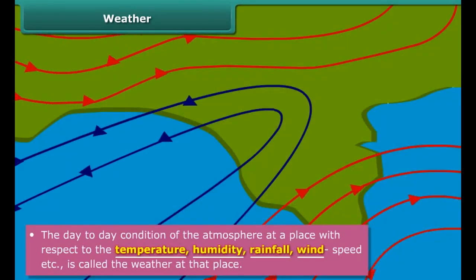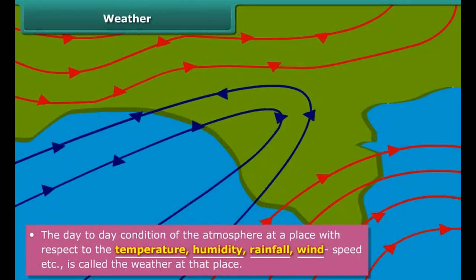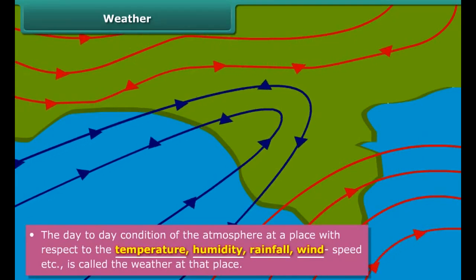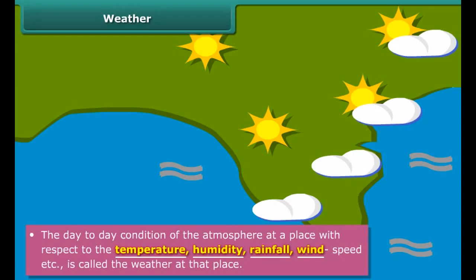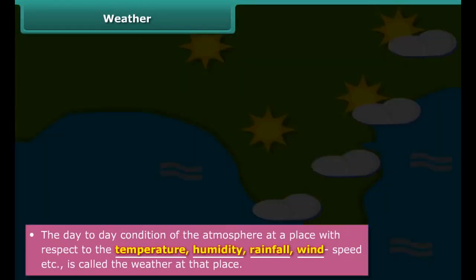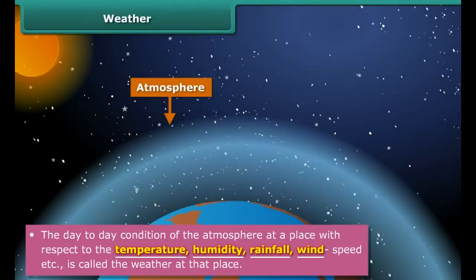This is called a change in weather. Temperature, humidity, rainfall, wind, and other factors are called the elements of weather. The weather of a place depends on these factors.